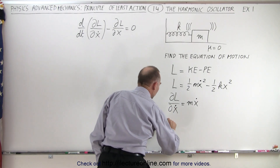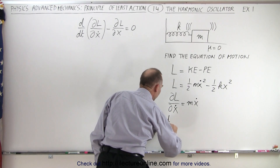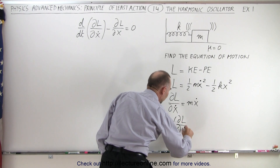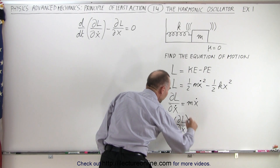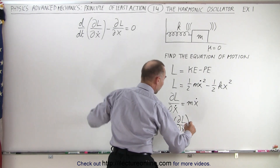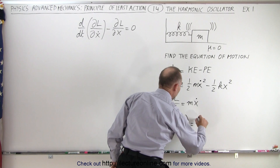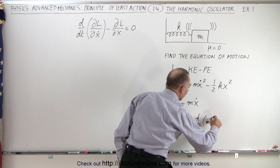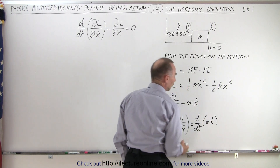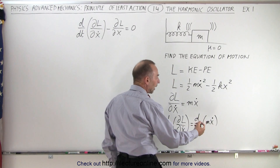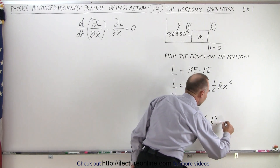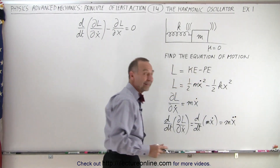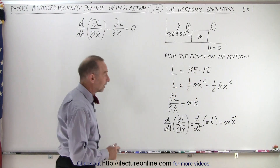Now we take the d/dt of the partial of L with respect to x-dot, which is the d/dt of m x-dot. That of course becomes m x-double-dot — and x-double-dot is simply the acceleration in the x direction.